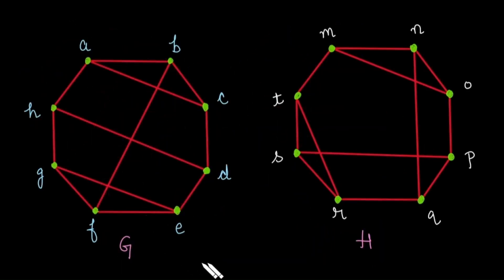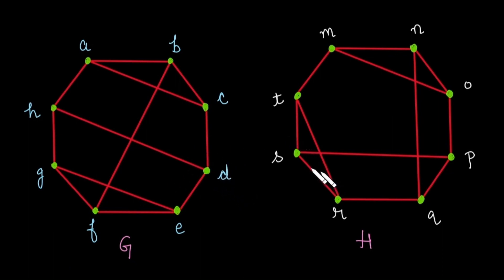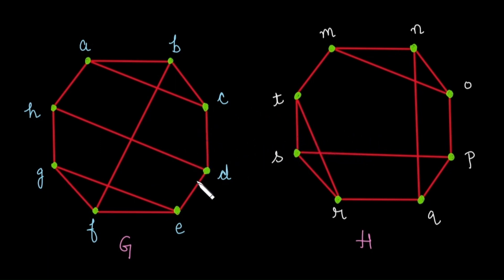Now apply the same concept to a new example. We need to check whether graph G and H are isomorphic or not. First, count the number of vertices, edges, and the degree sequence. In this case, graph G has the same count of vertices as graph H, the number of edges in both graphs is the same, and their degree sequences are also the same. So let's try to identify using paths whether the graphs are isomorphic or not.